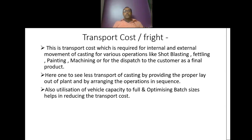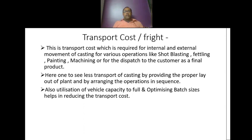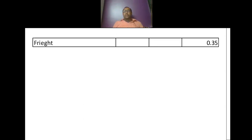Transport freight cost is required for internal and external movement of the casting for various operations like shot blasting, fettling, painting, machining, or for final dispatch to the customer. One has to reduce transport of castings by providing a proper plant layout and arranging operations in sequence. Utilization of vehicle capacity to the full and optimizing batch sizes helps in reducing transport cost. I have considered Rs 0.35 per kg of good casting as the transport freight cost.